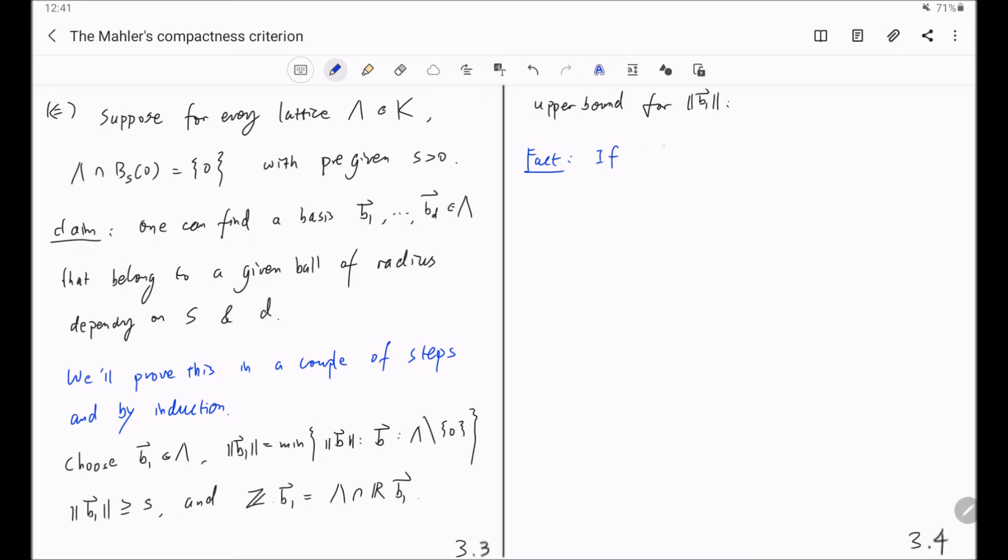If the ball with radius 2r centered at 0 does not contain a lattice point of lambda, with origin removed, then if you consider the following natural embedding of the ball centered at 0 with radius r into the quotient R^d mod the lattice.